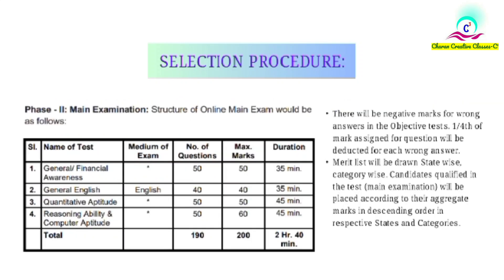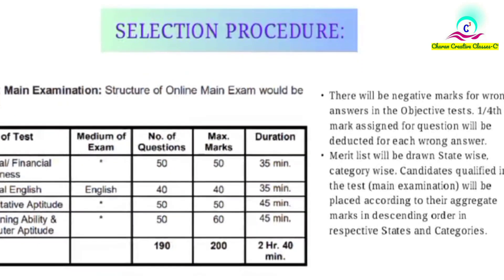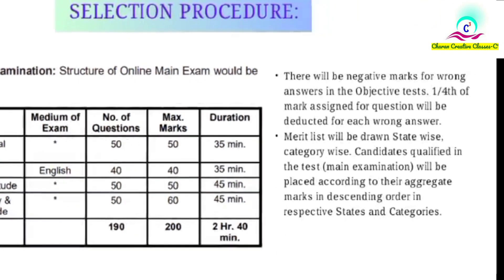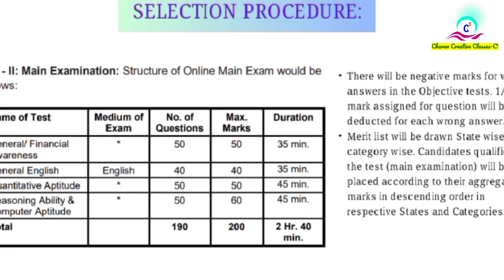If you qualify for the prelims, the mains exam has four sections. General and Financial Awareness: 50 questions, 50 marks, 35 minutes. General English: 40 questions, 40 marks, 35 minutes. Quantitative Aptitude: 50 questions, 50 marks, 45 minutes. Reasoning Ability and Computer Aptitude: 50 questions, 60 marks, 45 minutes. The total is 190 questions, 200 marks, and the exam duration is 2 hours and 40 minutes. There is negative marking — one-fourth of a mark is deducted for each wrong answer.